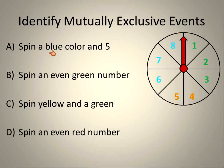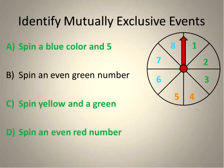Alright, we're back. Spinning a blue color and a five. You can't spin a blue and a number five at the same time. So those are mutually exclusive events. You can't do both at the same time. Spinning an even number and a green. You could spin the even number two and a green at the same time. Therefore they are not mutually exclusive events. These are events that could happen at the same time.